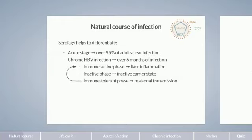resulting in minimal inflammation in the liver despite a very high viral load. The immune-tolerant phase lasts an average of 30 years and progresses into a phase with active liver disease, which in an even later stage can resolve to an inactive carrier state. One consequence of the long duration of immune tolerance is that it leads to a high frequency of maternal-infant transmission in endemic countries.